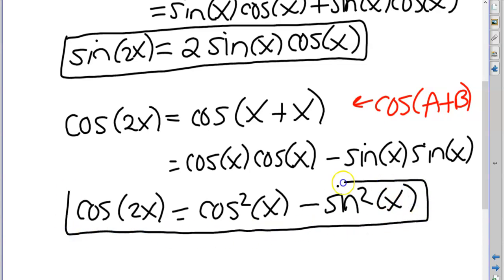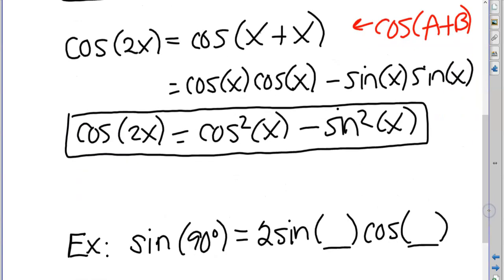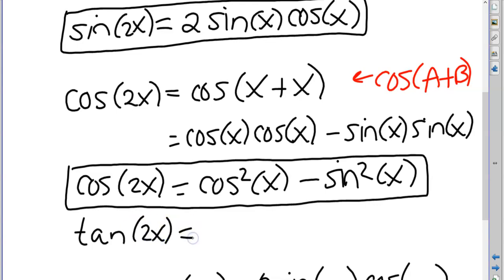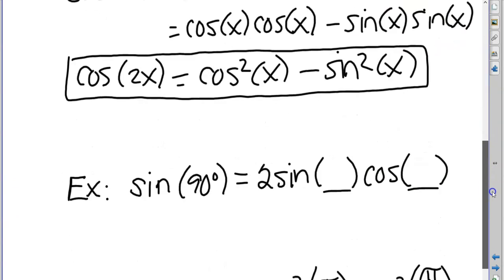So cosine of 2x equals cosine squared x minus sine squared x — that's the second double argument property. For tangent of 2x, there is a derivation, but we hardly ever use that one, so I'll skip it. Those are the two main double argument properties.